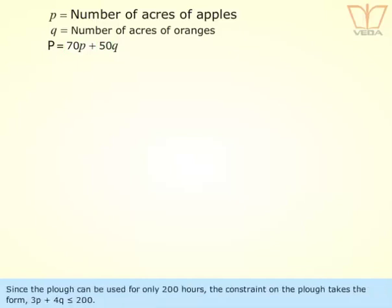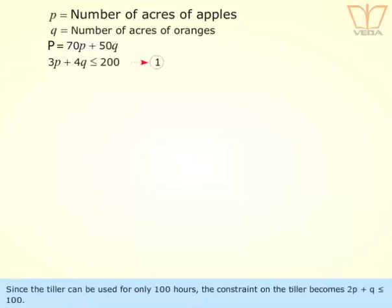Since the plough can be used for only 200 hours, the constraint on the plough takes the form 3p plus 4q is less than or equal to 200. Since the tiller can be used for only 100 hours, the constraint on the tiller becomes 2p plus q is less than or equal to 100.